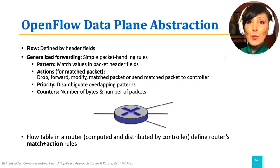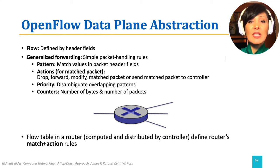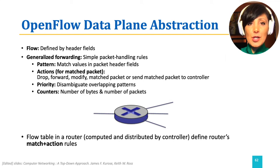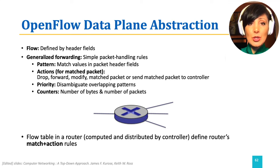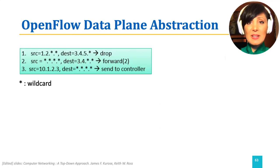Each flow is defined by header fields. Generalized forwarding matches packets based on a generalized set of rules. It also generalizes the set of actions that include dropping, forwarding, modifying, or sending the matched packet to the controller. It also maintains counters that keep statistics of the matched packets.